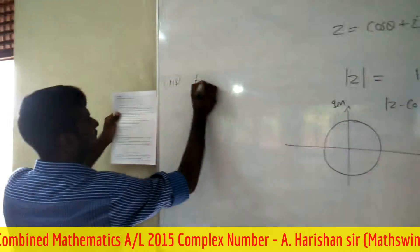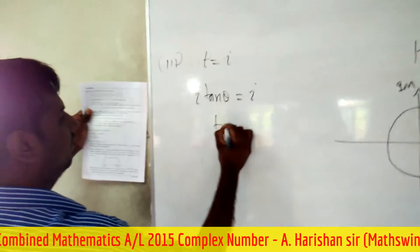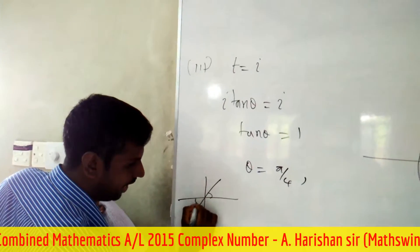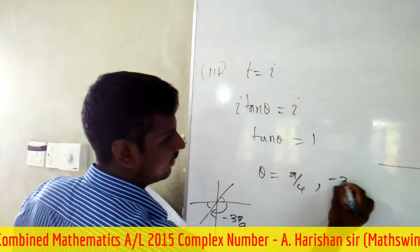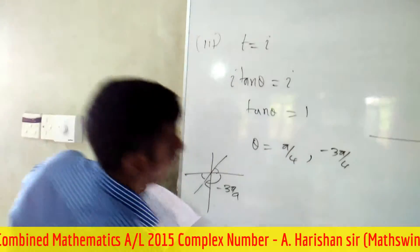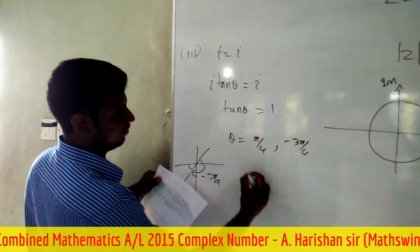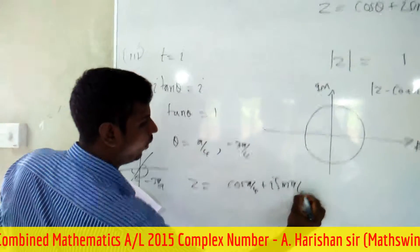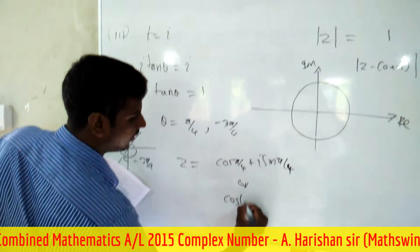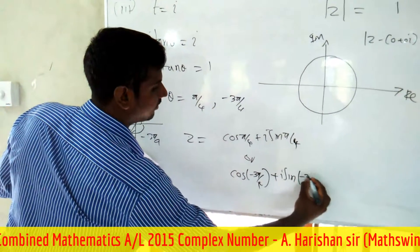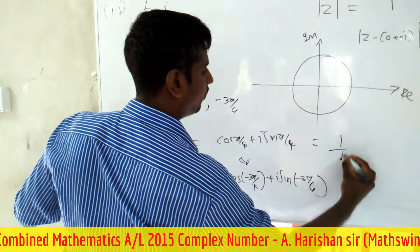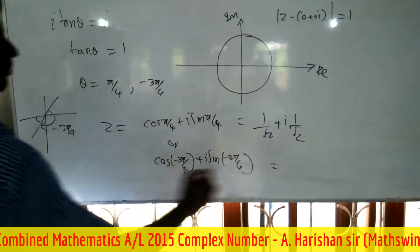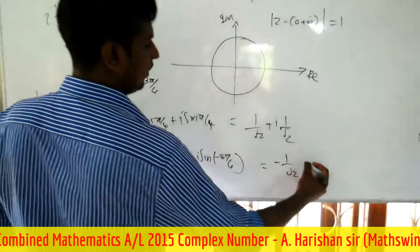For the third part, t = i. Since t = i tan θ, we have i tan θ = i, so tan θ = 1. Therefore θ = π/4 or θ = −3π/4. Thus z = cos(π/4) + i sin(π/4) or z = cos(−3π/4) + i sin(−3π/4), giving z = 1/√2 + i/√2 or z = −1/√2 − i/√2.